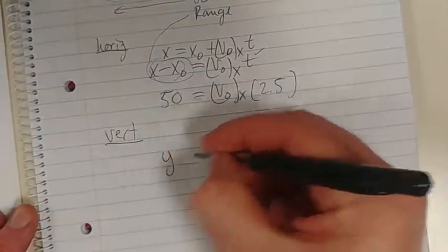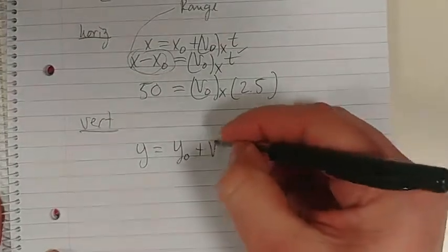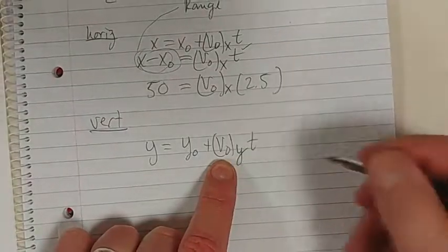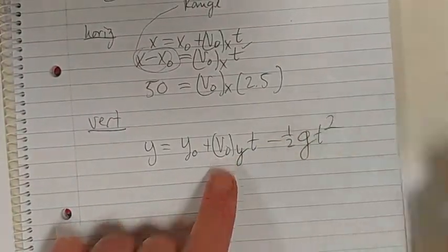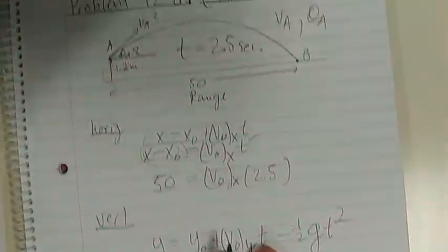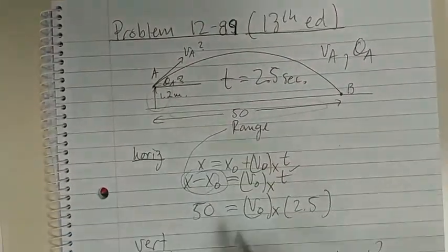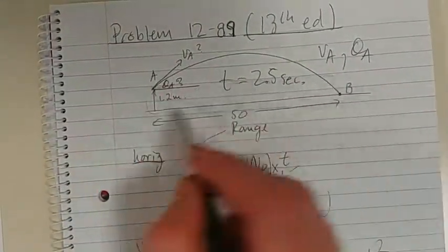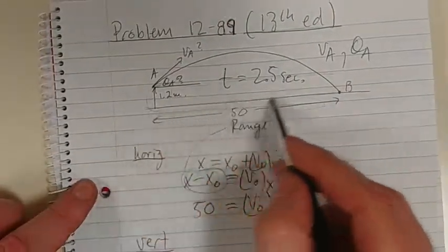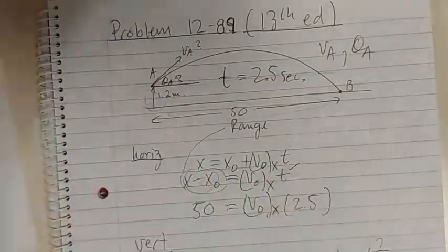We say Y equals Y0 plus V0 in the Y, the initial velocity in the Y, times time minus a half GT squared. Now, you can, again, like I said in the previous videos and in class, you can use your reference frame either from there if you want or from there. It depends on what you choose. I'm going to choose my reference frame from here to measure my vertical distances. I'm going to measure it from the ground.